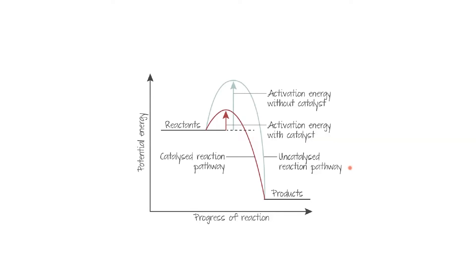Biological catalysts are called enzymes. Enzymes allow us to do many reactions that would otherwise not be possible for the human body or other living things. An important fact: because transition metals have variable oxidation states, they allow us to do these kinds of reactions. Be cautious: technically you cannot simply say 'catalyst lowers the activation energy.' CIE has released statements clarifying this. The correct phrasing is that a catalyst gives a different pathway which has a lower activation energy.